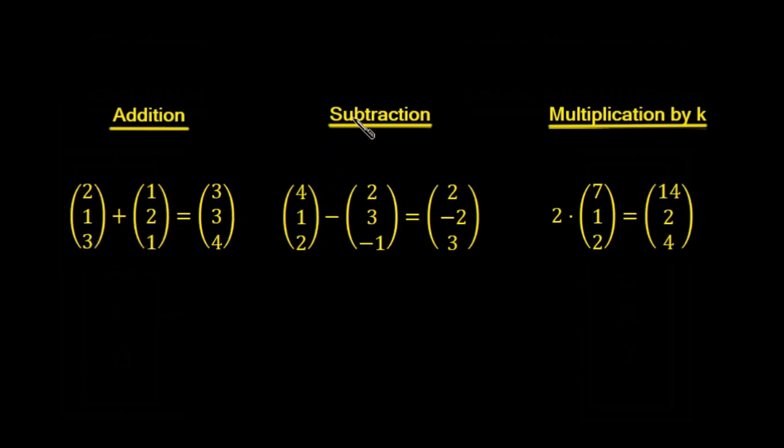4 minus 2 is 2, 1 minus 3 is -2, and 2 plus 1 is 3. And multiplication by a constant: we just multiply each of the components by the constant. 2 times 7 is 14, 2 times 2 is 4, and 2 times -2 is -4.